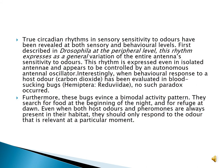Two circadian rhythms in sensory sensitivity to odors have been revealed at both sensory and behavioural levels, first described in Drosophila at the peripheral level. This rhythm is expressed as a general variation of the entire antenna's sensitivity to odors, and it is expressed even in isolated antennae, appearing to be controlled by an autonomous antennal oscillator.